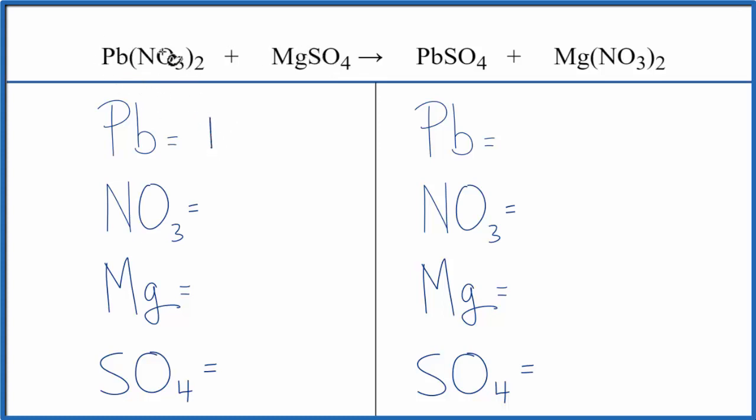We have one lead, and then this NO3—it's called a nitrate ion, and it stays together when this reaction takes place. So we have NO3 here, it stays together, there it is again. So we're going to call this just one item. I have one NO3, and this two, two times the one, that gives me a total of two nitrate ions.